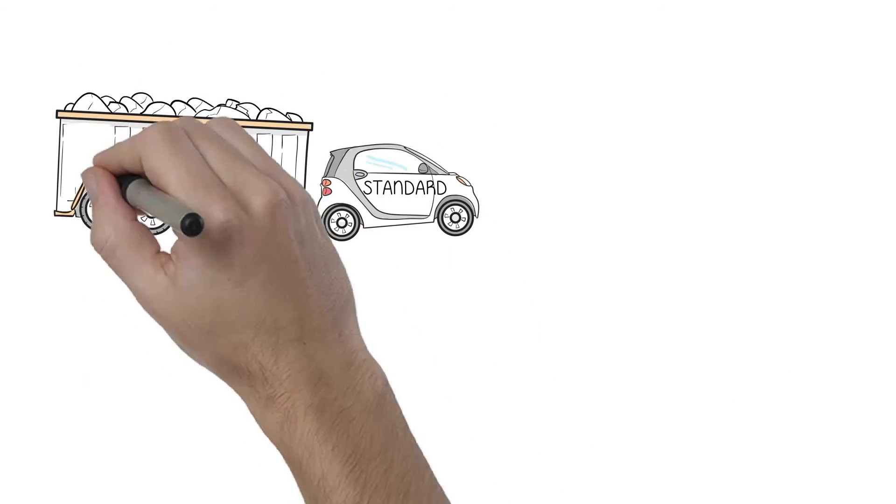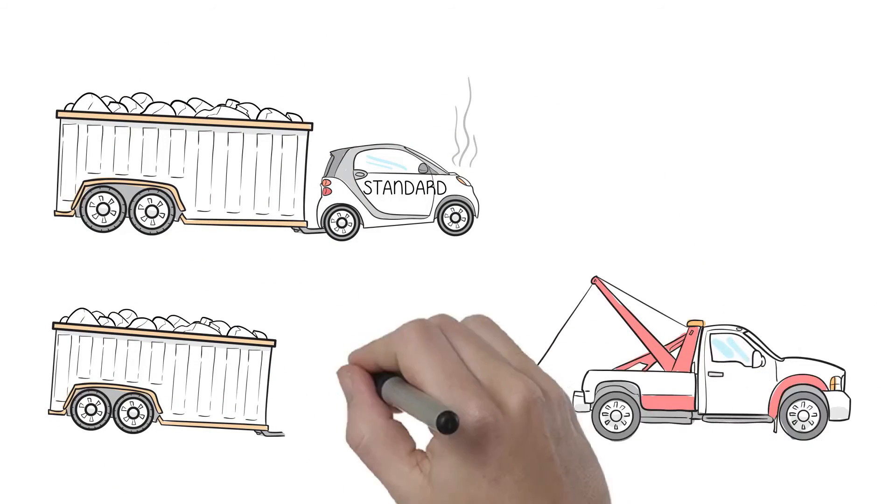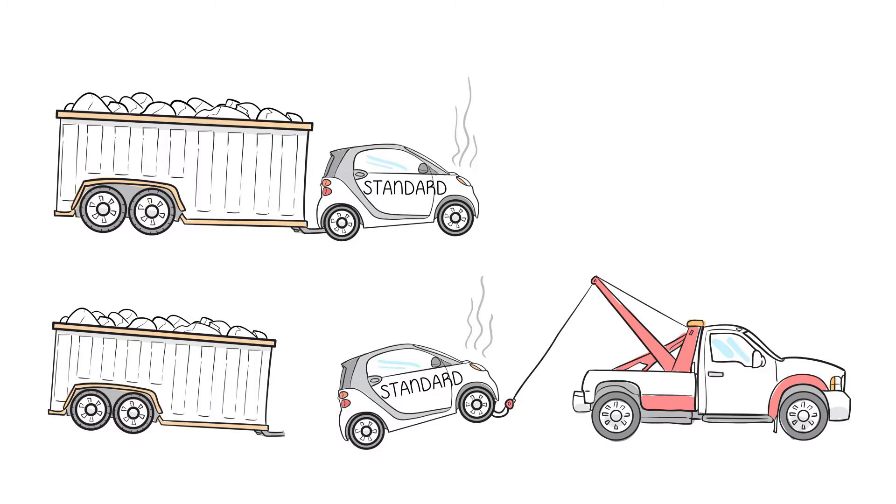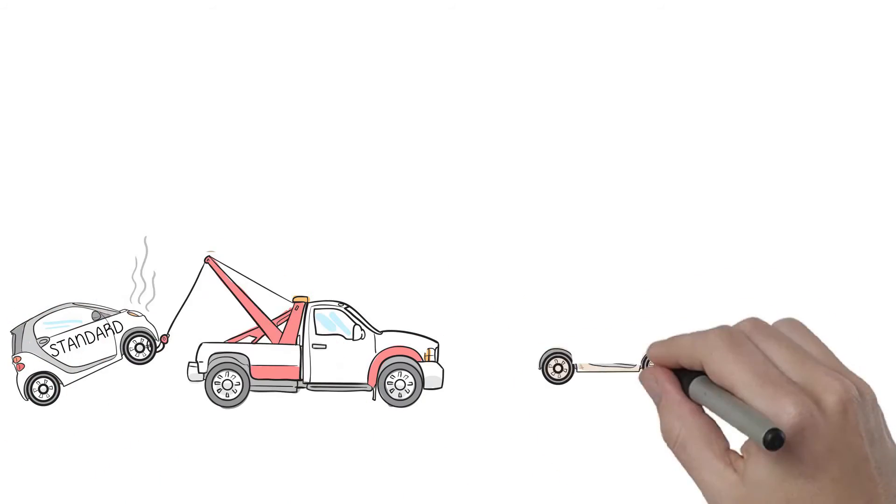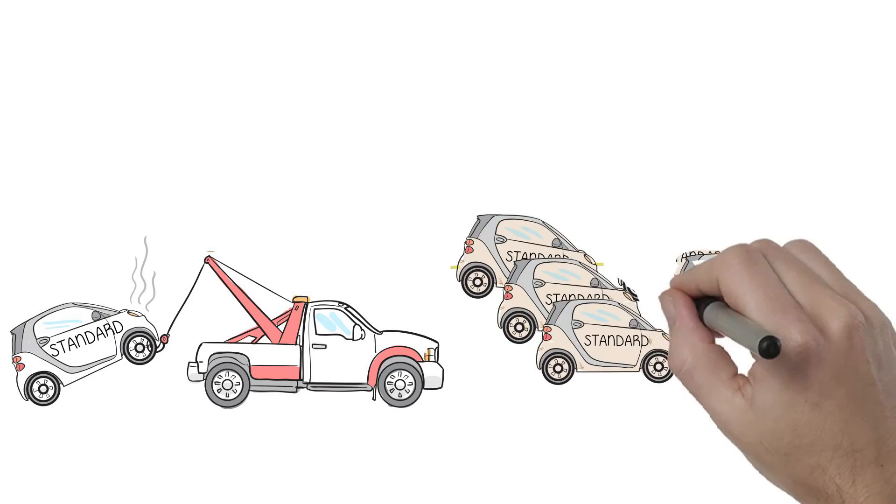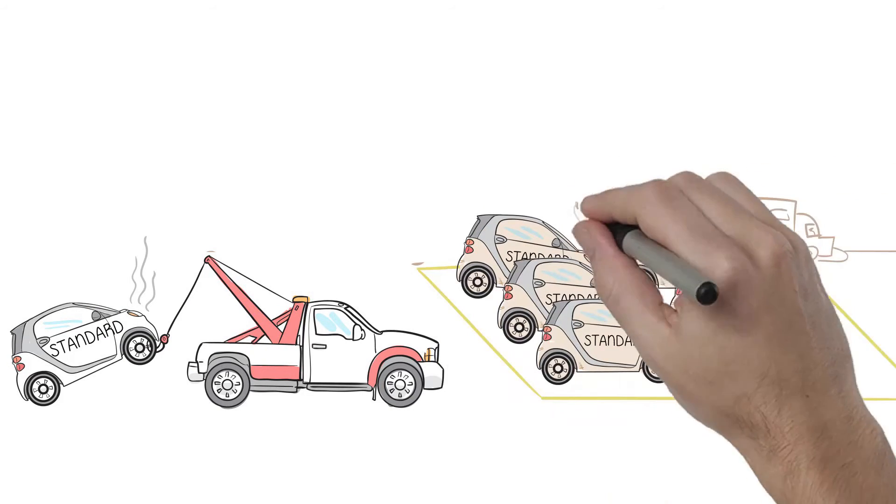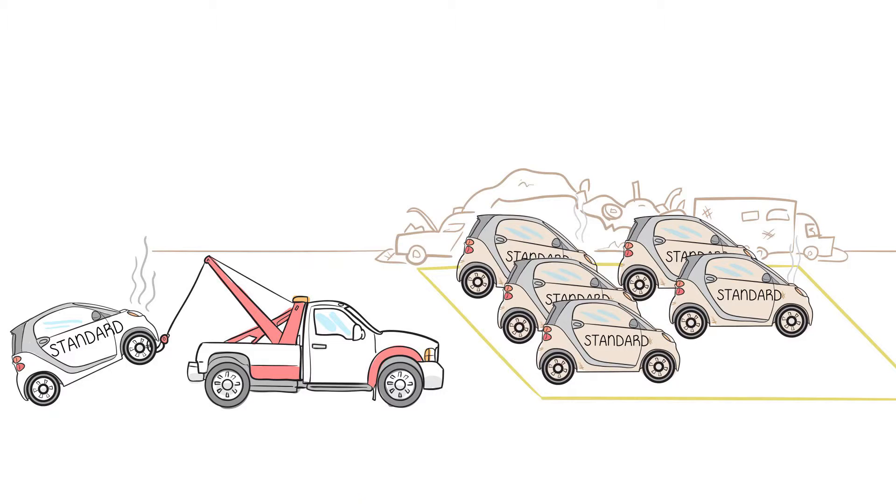What happens when you run a standard drive under an enterprise workload? You guessed it. Premature failure. In a tough enterprise type setting, you can replace up to six standard drives in the time it takes to wear out one enterprise drive built for that workload and environment.